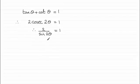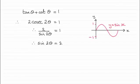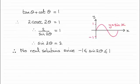If I multiply both sides by sin(2θ), I end up with sin(2θ) equaling 2. Now you should be familiar with the sine graph — if we were to sketch that graph it would look something like this. The graph only goes between minus 1 and 1, so we wouldn't expect the sine of any angle to equal 2; it's outside the range. Therefore we can conclude there must be no real solutions, since sin(2θ) only goes between minus 1 and 1.